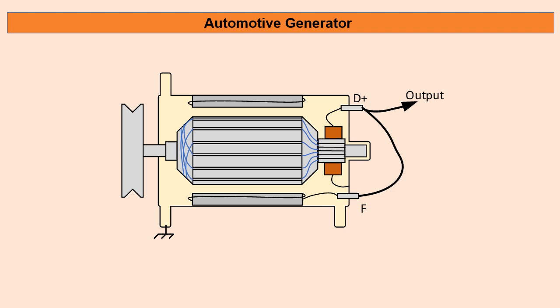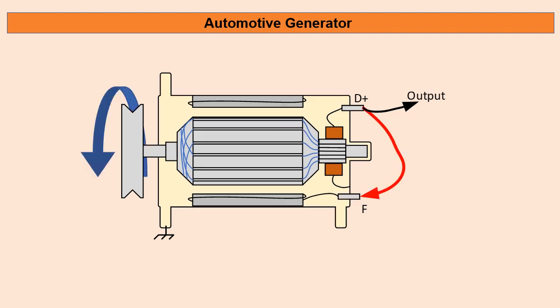This residual magnetism is very weak, so as it starts to spin we get a very small amount of voltage coming out of the armature. Even though that residual magnetism is extremely weak, it still produces a small amount of output from the armature and this is connected directly back into the field circuit to very quickly strengthen that magnetic field. As it begins to spin, the voltage very quickly builds up to our normal charging voltage.